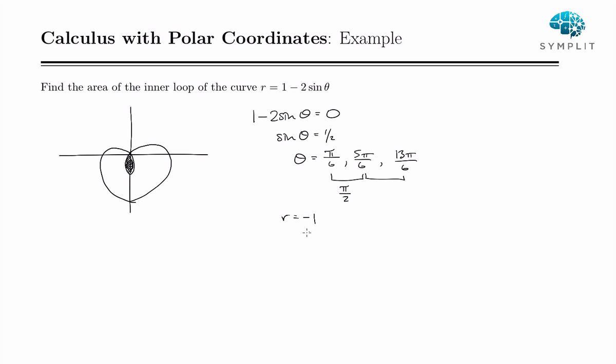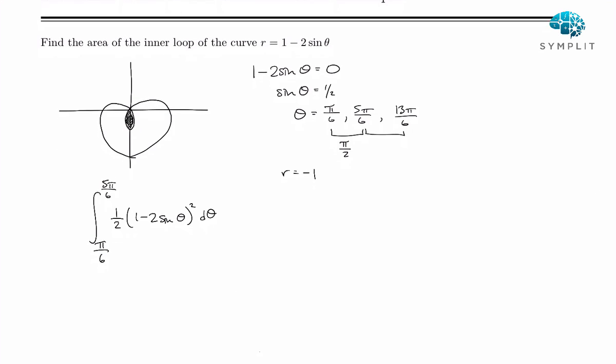So that's actually the interval that we need. So now we're going to be integrating from pi over 6 to 5 pi over 6 and then we have one half and it's r squared. So 1 minus 2 sine theta squared. And that's the formula for the area enclosed by a polar curve.